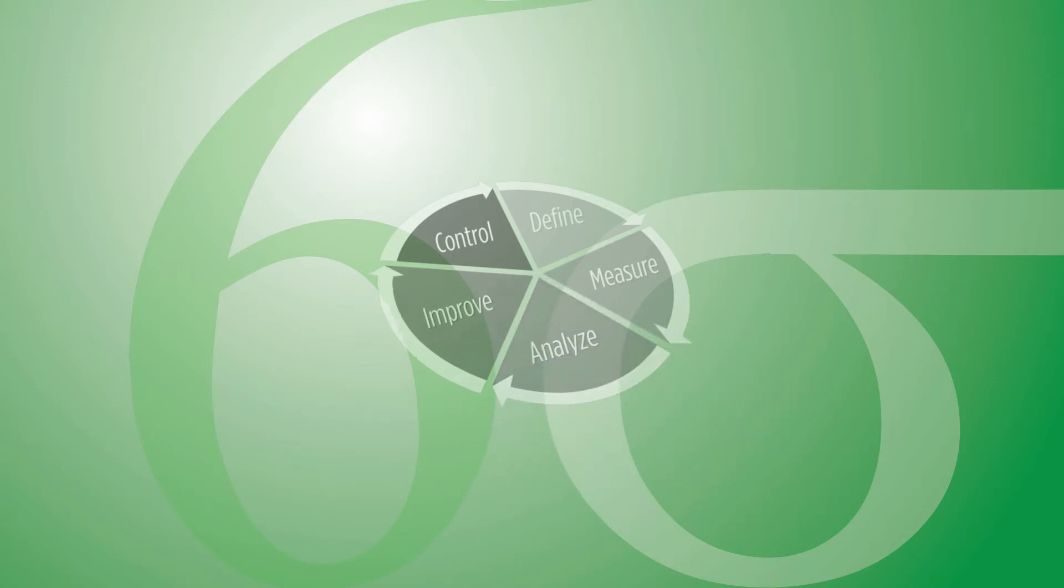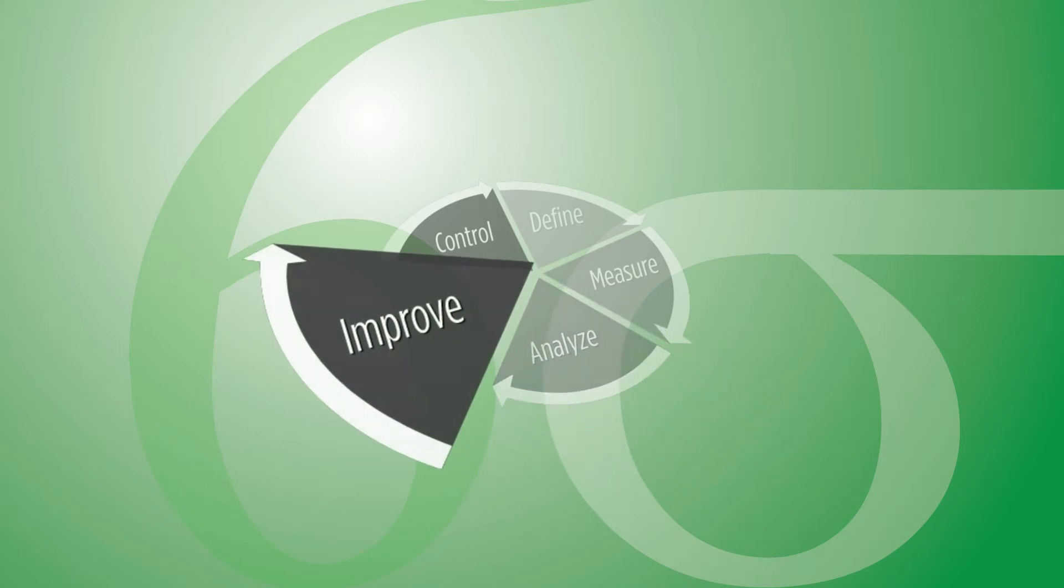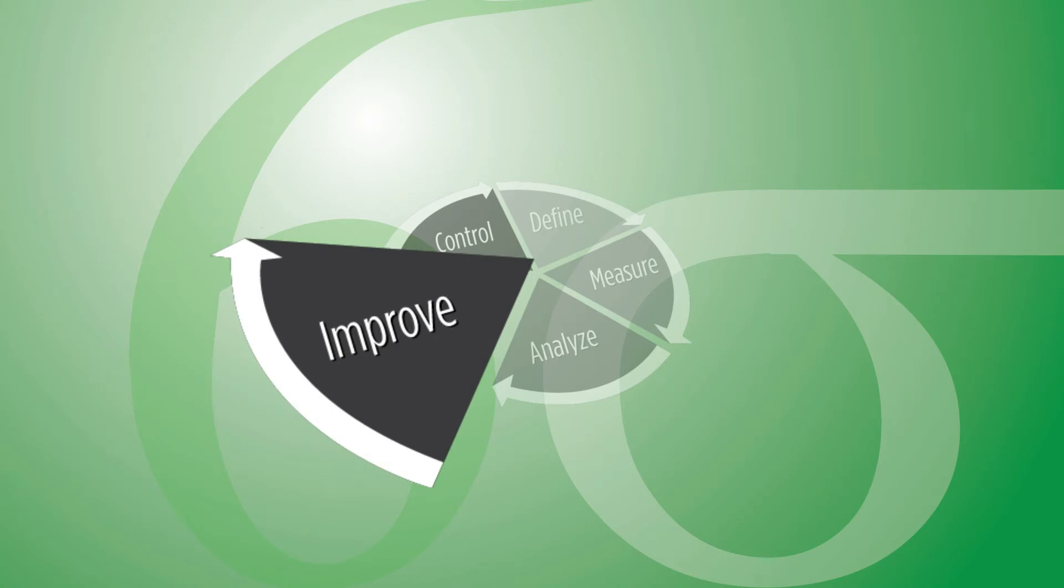Once you understand what the root causes are, you can move into the improve phase. In the improve phase, you're doing exactly that. You're looking for areas of opportunity. You're applying your creativity to come up with solutions to the problem that you know is at hand. And so once you've done the actual improvement activities, you're going to be at a new level of performance.